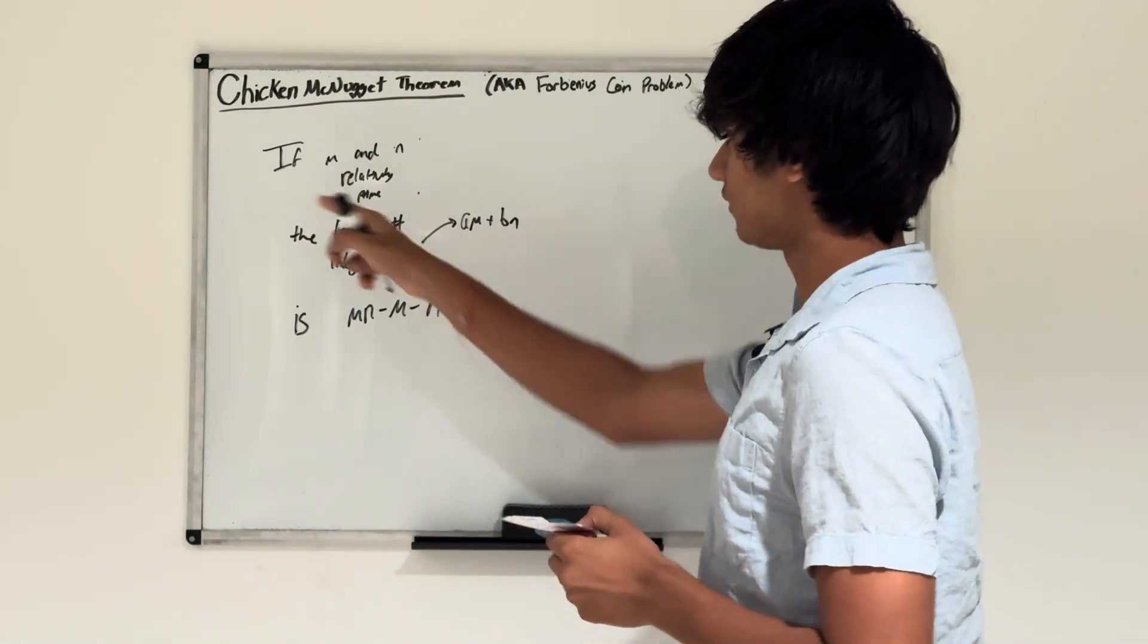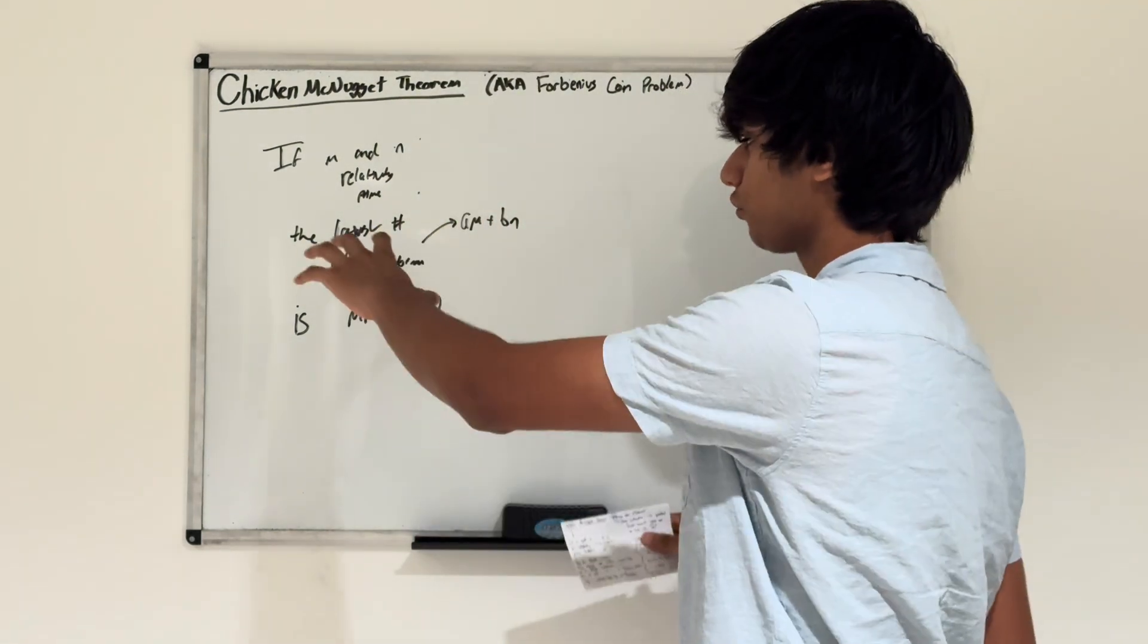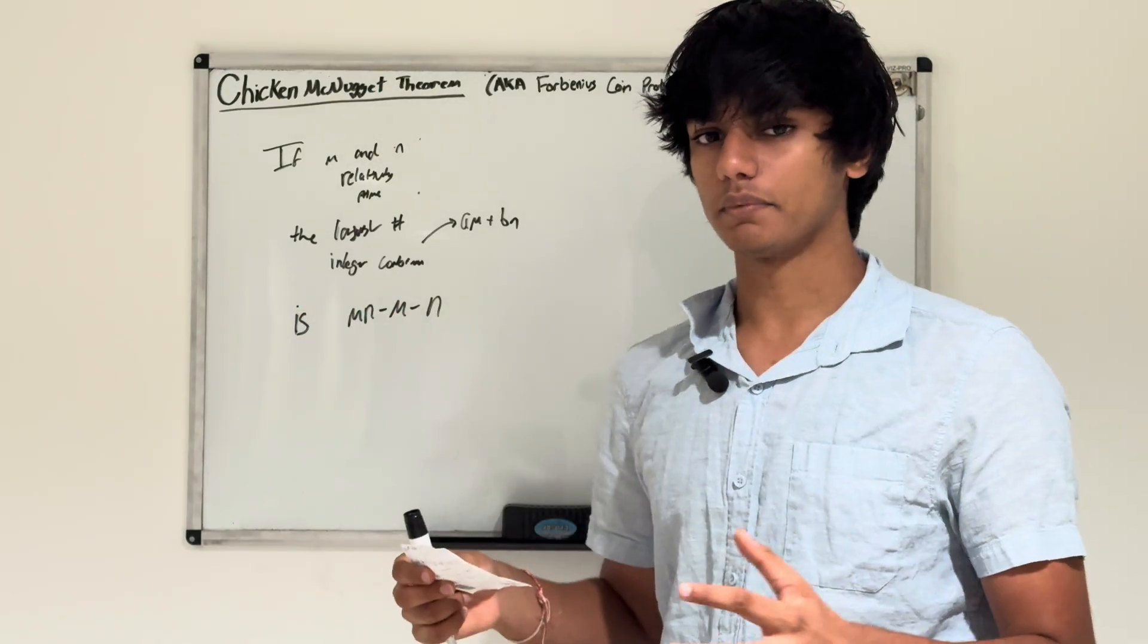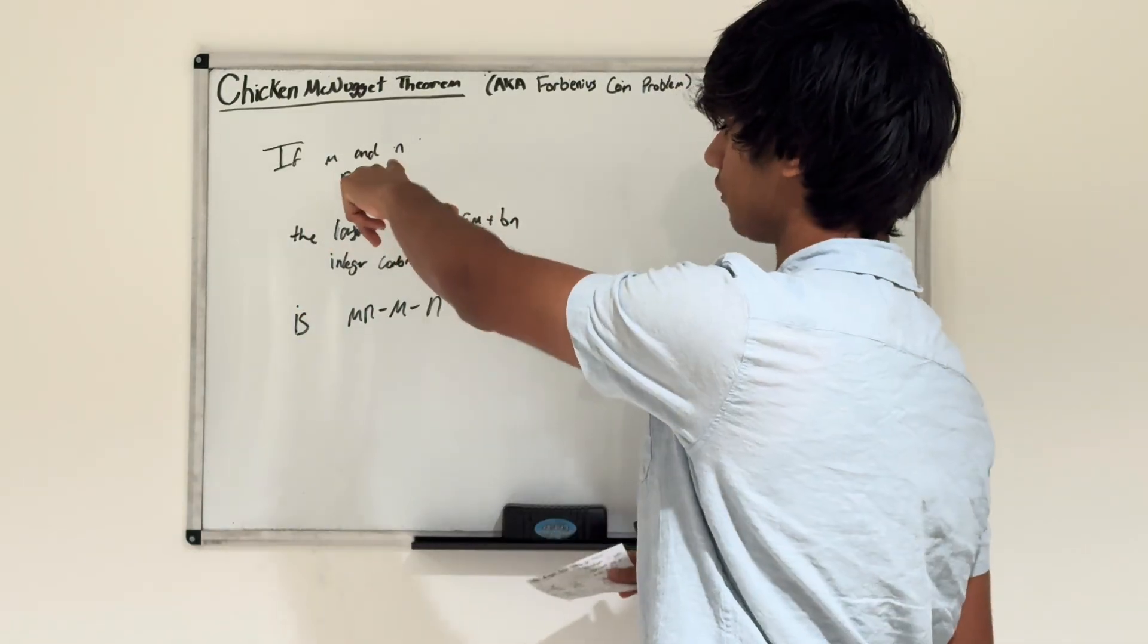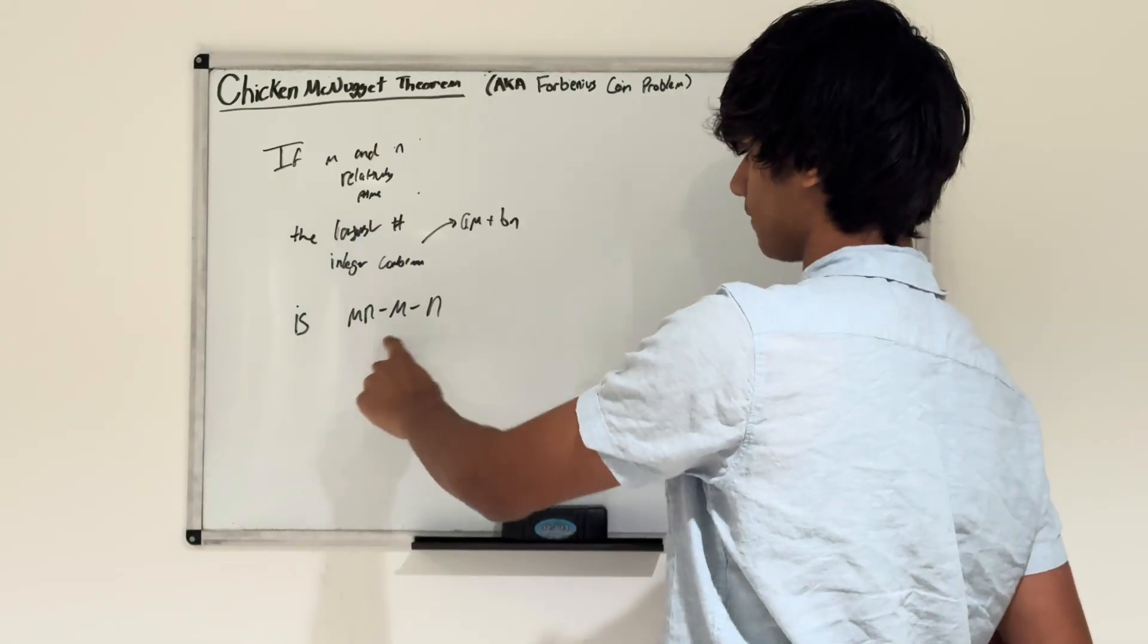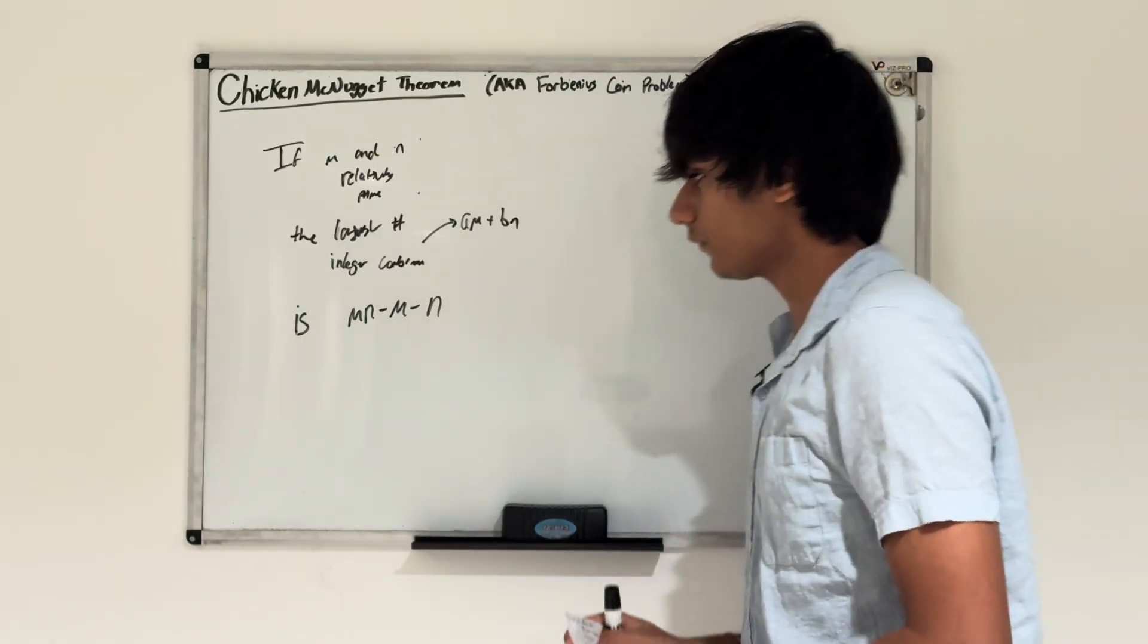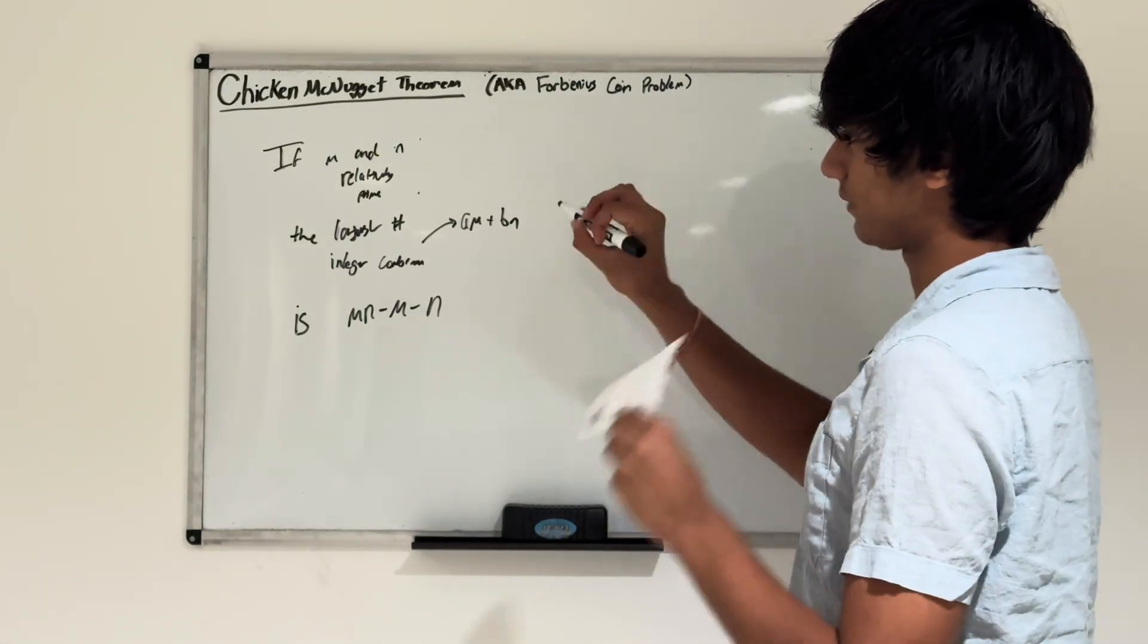So basically, we have these two relatively prime integers, and the largest number that cannot be created as a combination of mixing these two integers is equal to m·n - m - n. Let's dive into the problem and see what this actually means.